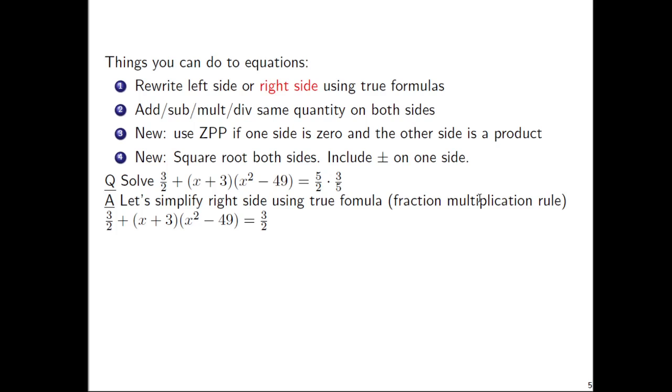So the right side is a fraction times a fraction. And we'll use the true formula for multiplying fractions together to get 5 × 3 is 15, and then 2 × 5 is 10. So 15/10, that reduces to 3/2. Okay, so we simplified the right side using the fraction multiplication rule, and then skipping a step, also reduced the fraction down to 3/2.